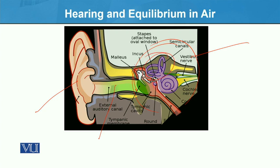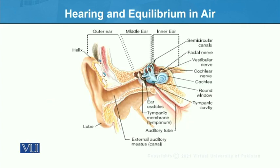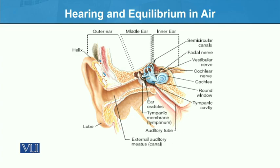The semicircular canals are not complete circles — they are incomplete, like a C-shape. Their ends are swollen and contain the device for equilibrium. These semicircular canals are responsible for equilibrium. This concludes the topic of hearing and equilibrium in air.